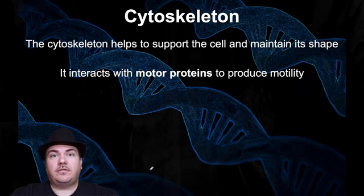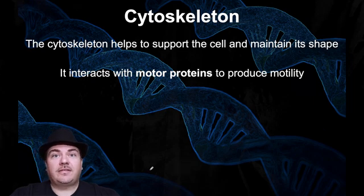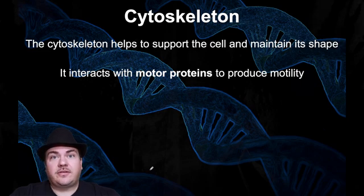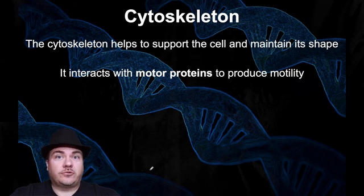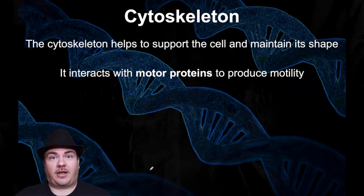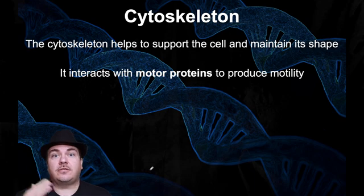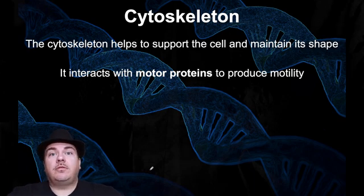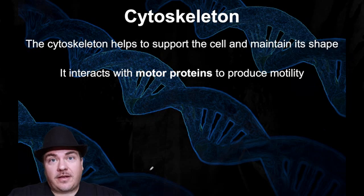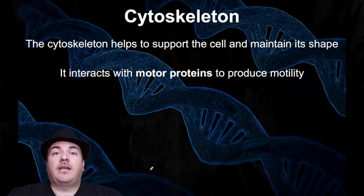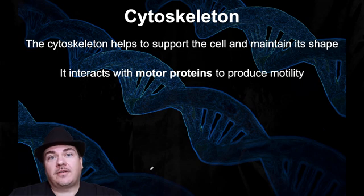Dr. Sage here. The next thing we're going to discuss in regards to the cell is the cytoskeleton. The cytoskeleton is basically like the cell skeleton. It does essentially the same things that your skeleton does for you — gives you your shape, and allows you to have motion. Like your muscles interacting with your skeletal system allows you to move. The cytoskeleton does the same thing for cells: it gives the cell its shape and it allows movement within cells and movement of entire cells.